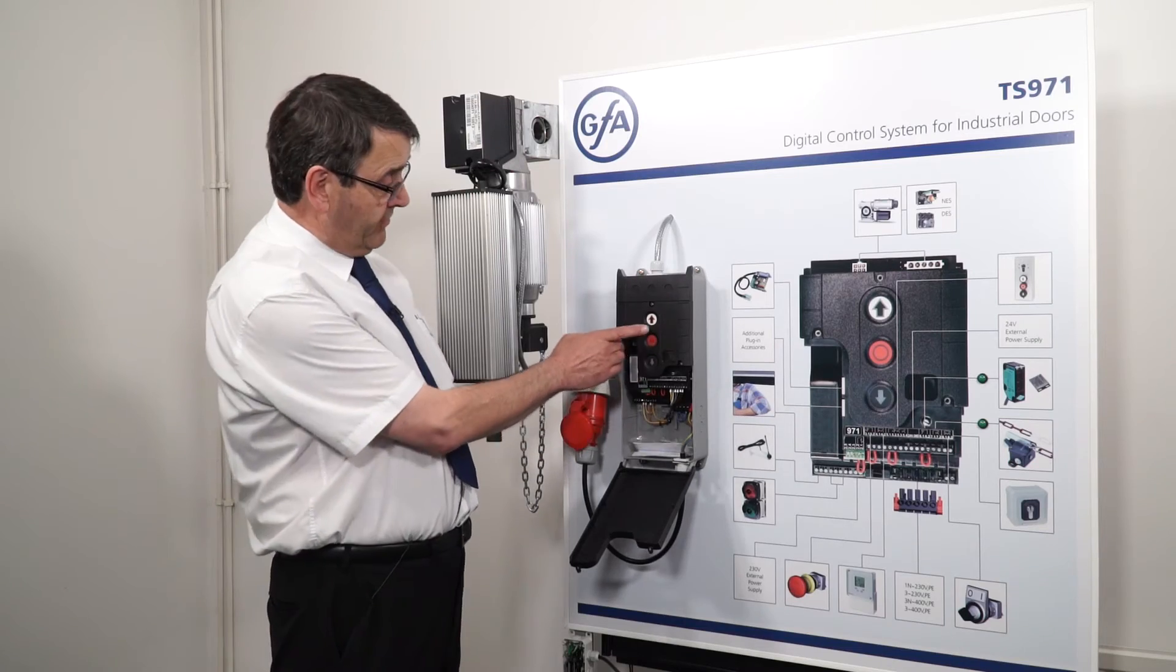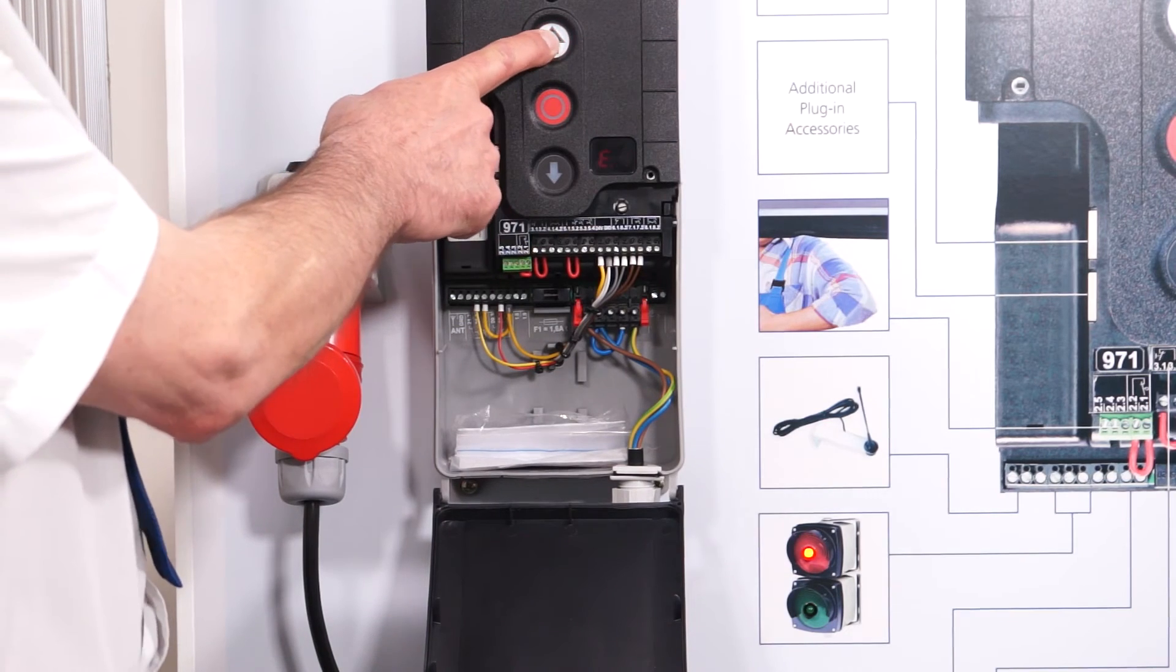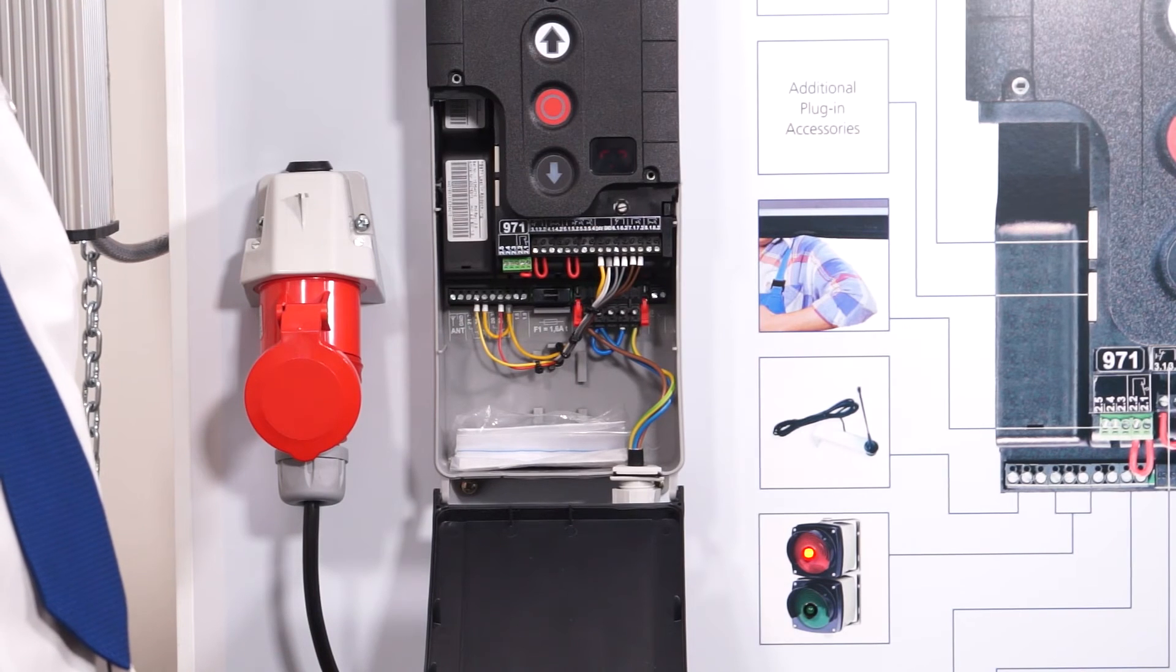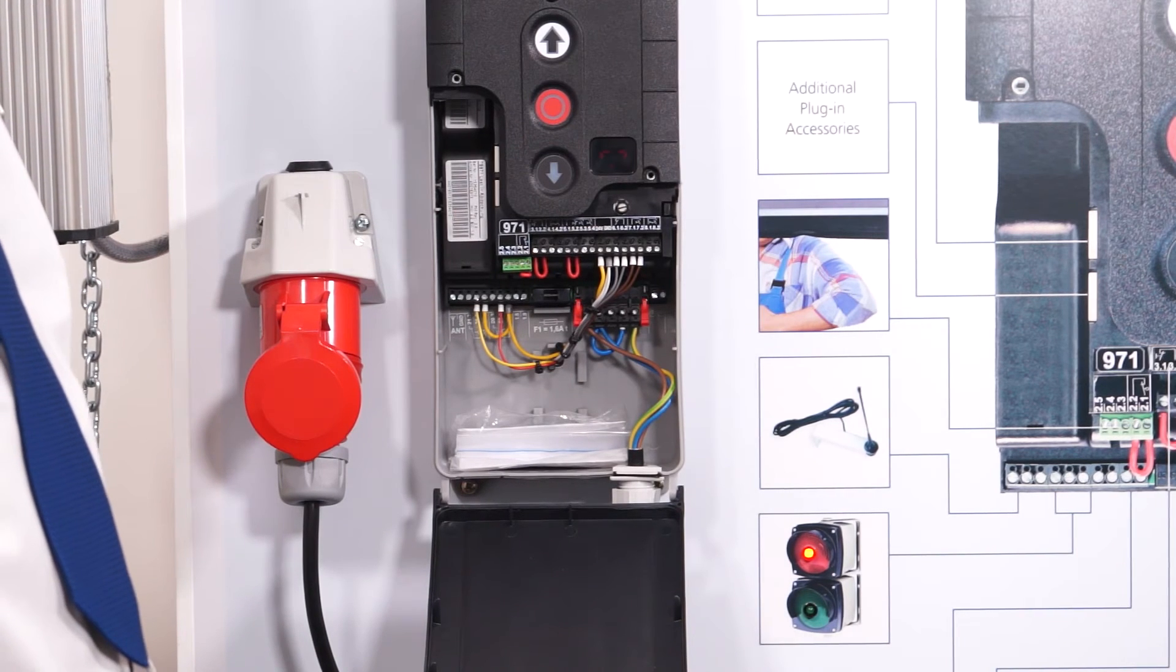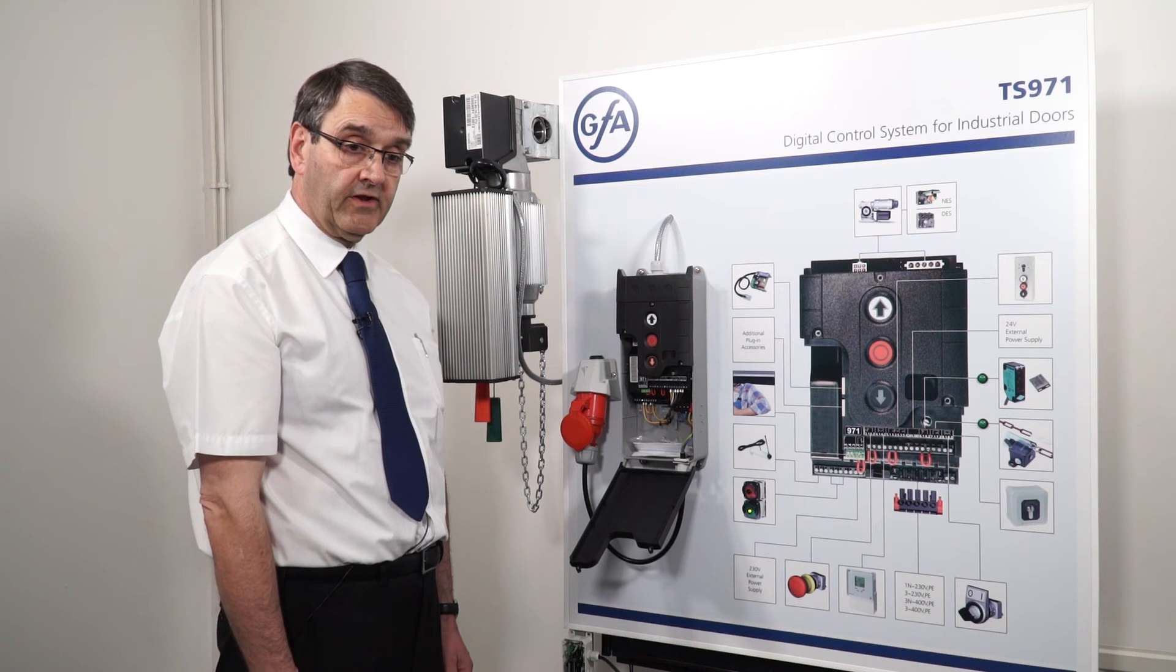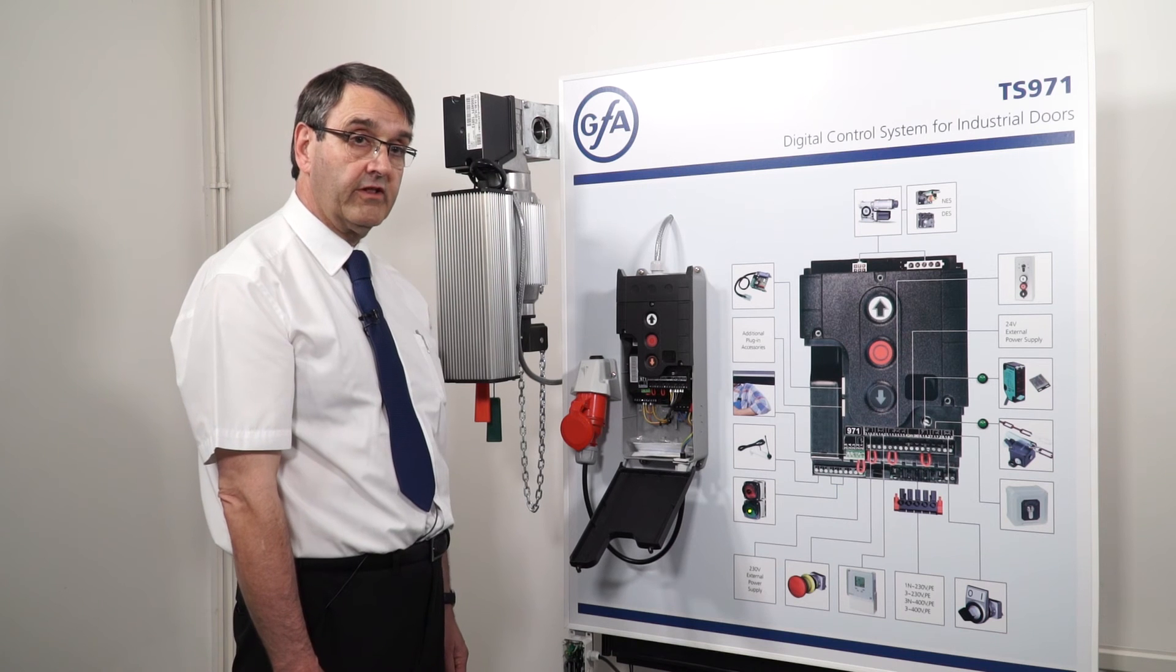Now as you will see when we press the up button the red light starts flashing to give a pre-warning and the door then starts to go up. When it gets to the top the green light comes on signifying that the door is fully open and is okay for traffic to proceed through.